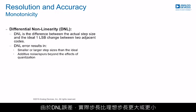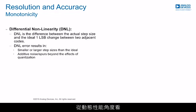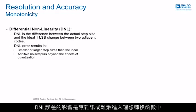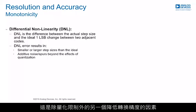Step sizes are larger or smaller than ideal due to DNL errors. From a dynamic performance perspective, the effect of DNL error is to add noise or spurs to an ideal transfer function, reducing the accuracy of the conversion beyond the limitations of quantization.